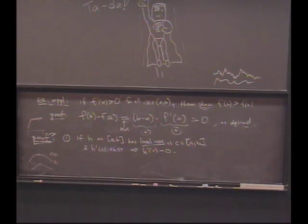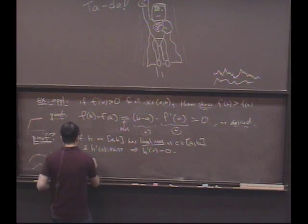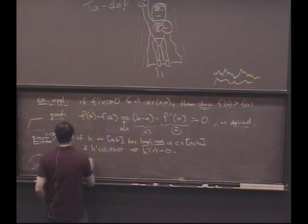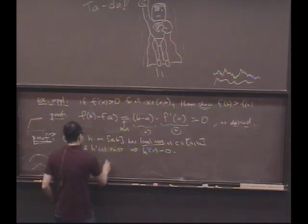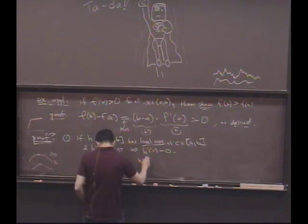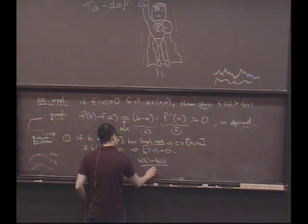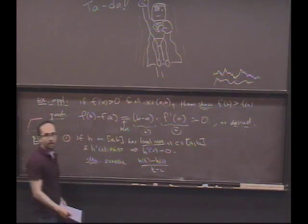Okay. Well, this is actually not bad, not hard to show. Here's the idea of the proof. Just take a look at what you're taking the limit of. Look, suppose I look at h of t minus h of c, and compare that to t minus c.